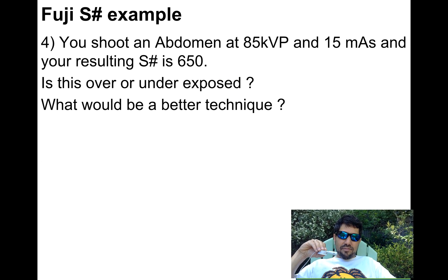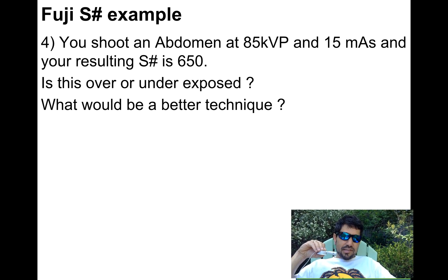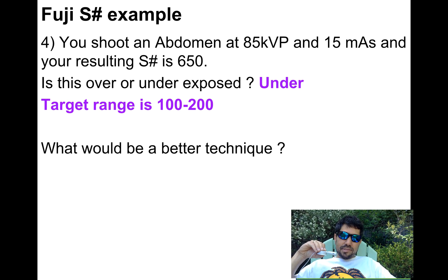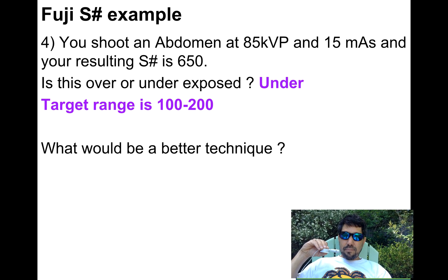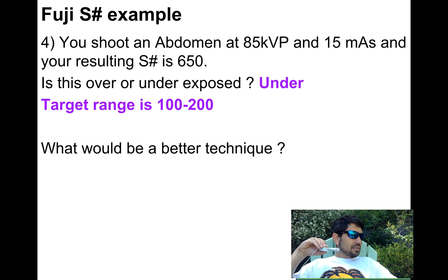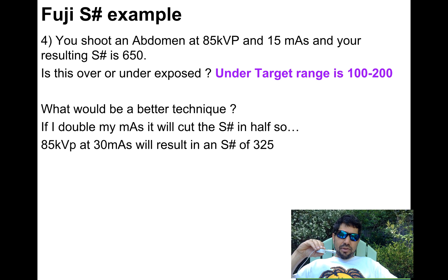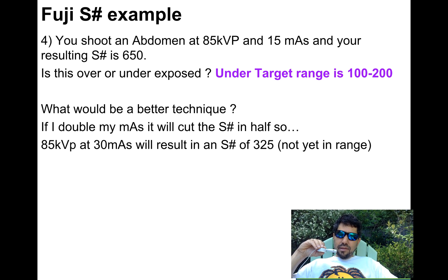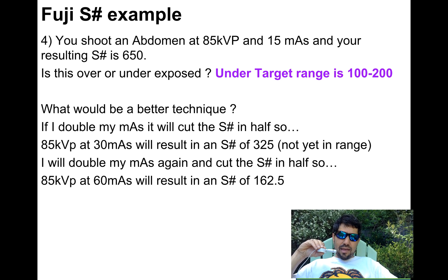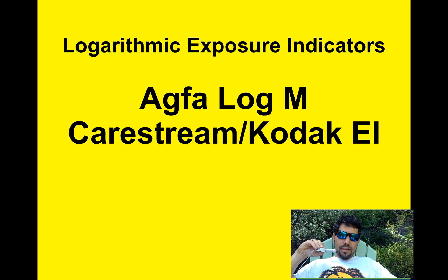Number four: you shoot an abdomen at 85 kVp and 15 mAs. Your S number is 650. Is that over or under? It's under — my range is 100 to 200, and in an inverse system, a big number means low dose. What would be a better technique? If I double my mAs to 30, I'll cut that S number in half to 325. Am I in range? No. I'll double again — 60 mAs gives me an S number of 162.5. I'm in range. That's my answer.